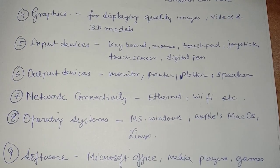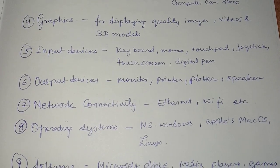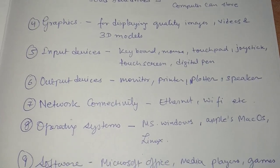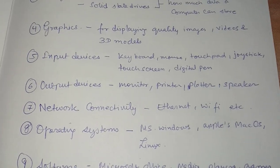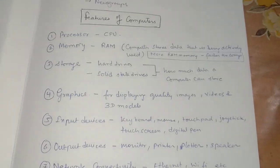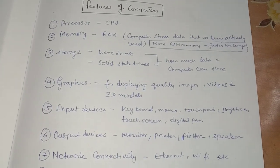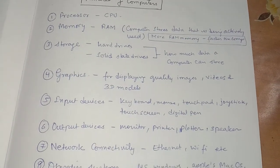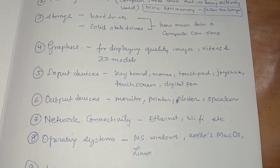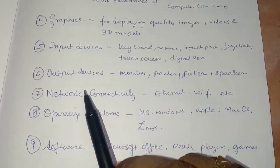Then there is graphics — for displaying quality images, video, and 3D models, a graphics card is used. If you are purchasing a computer, you have to look for these points, along with some additional ones.